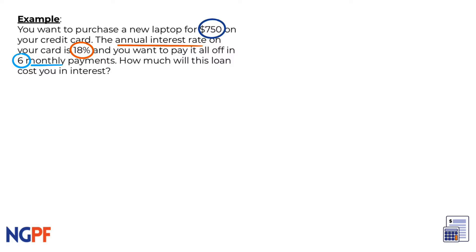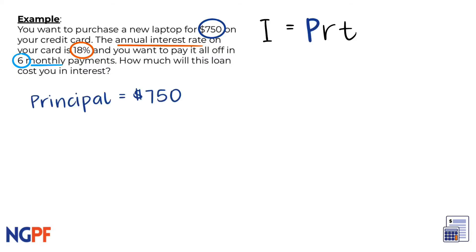Let's keep the simple interest formula at the top of our workspace to refer back to. We can first identify the variables we need in the formula. We need our initial principal amount that we're borrowing, which is $750 on the credit card. For our interest rate, we need to change 18% to a decimal by moving the point over twice to the left to get 0.18.